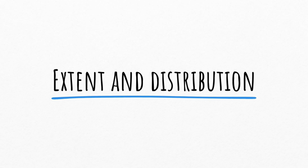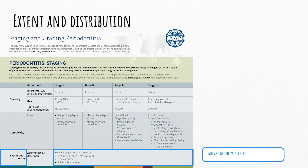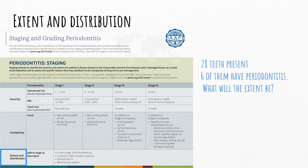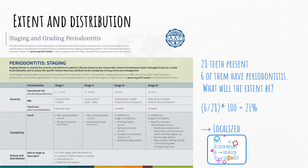Now going to extent and distribution. The extent could be described as localized, generalized, or molar incisor pattern — which was previously known as aggressive periodontitis. If we have 28 teeth excluding third molars, and 6 teeth have periodontitis, dividing 6 by 28 and multiplying by 100 gives 21%, which is less than 30% — therefore, this is localized periodontitis. 30% or more and it's generalized; affecting only first molars and incisors, it's a molar incisor pattern. To simplify: if 8 or fewer of 28 teeth are affected, it's localized; more than 8 and it's generalized.